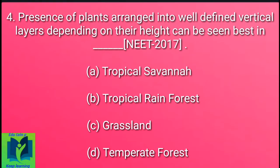Presence of plants arranged into well-defined vertical layers depending on their height can be seen best in which of the following? Option A: Tropical savanna. Option B: Tropical rain forest. Option C: Grassland. Option D: Temperate forest.